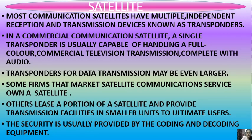Some more points related to satellite. Most communication satellites have multiple independent reception and transmission devices known as transponders. In a commercial communication satellite, a single transponder is typically capable of handling a full-color commercial television transmission complete with audio. Transponders for data transmission may be even larger. Some firms that market satellite communication service own a satellite, while others lease a portion of a satellite and provide transmission facilities in smaller units to ultimate users. Security is typically provided by coding and decoding equipment.